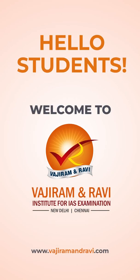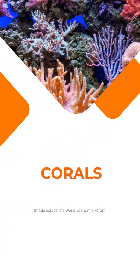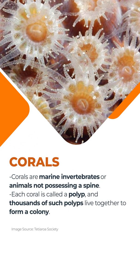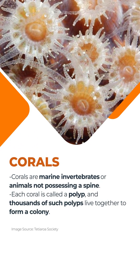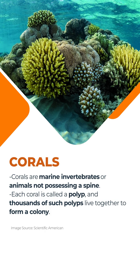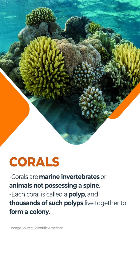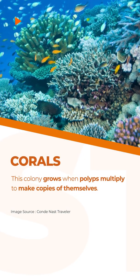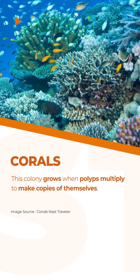Hello students, welcome to Wajiram and Ravi. Today let us quickly look into the corals. Corals are marine invertebrates or animals not possessing a spine. Each coral is called a polyp and thousands of such polyps live together to form a colony. This colony grows when polyps multiply to make copies of themselves.